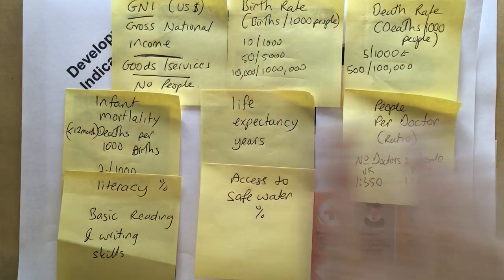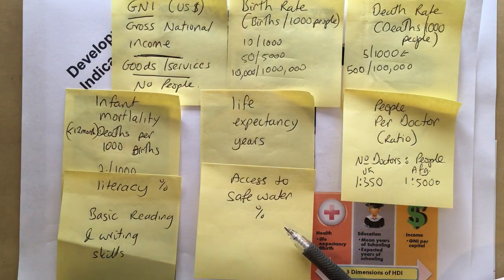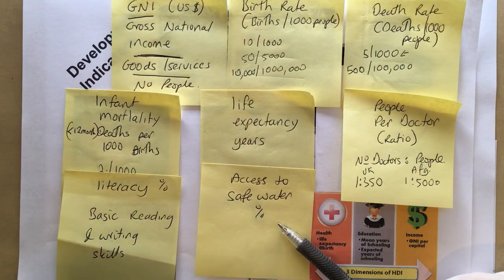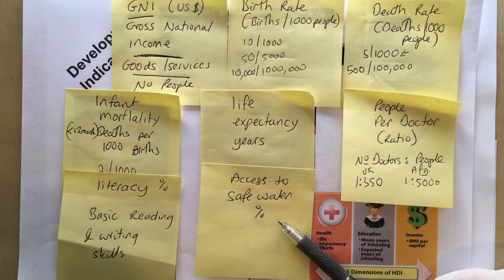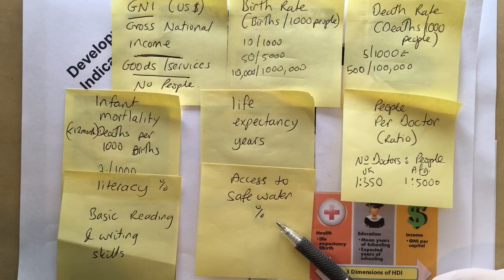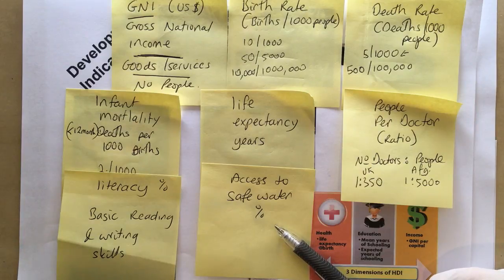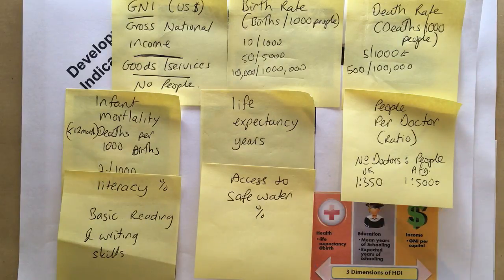The next indicator is access to safe water. In the UK, everyone has access to safe water — turn on any household tap and you have clean drinking water. In many countries, very few people have that access. For example, in Angola only 34% of people have access to safe drinking water, and in Nigeria it's about 69%. 'Safe' means the water has been treated so that waterborne diseases like cholera pose less risk.